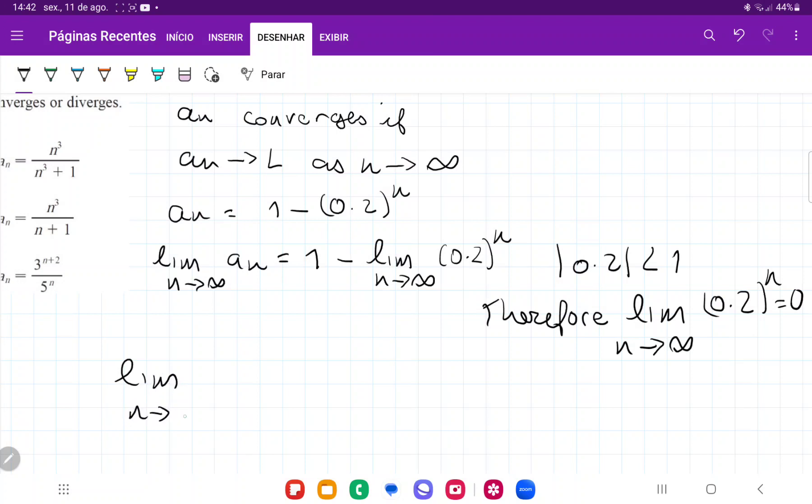So limit as n approaches infinity of a_n is equal to 1 minus, this limit is 0, right? 1 minus 0, which is equal to 1.